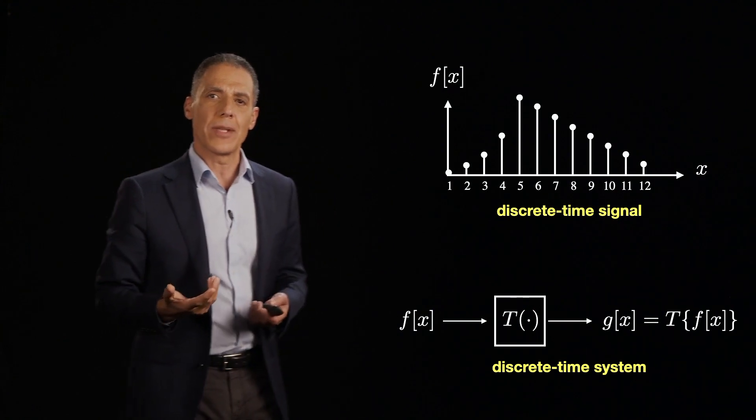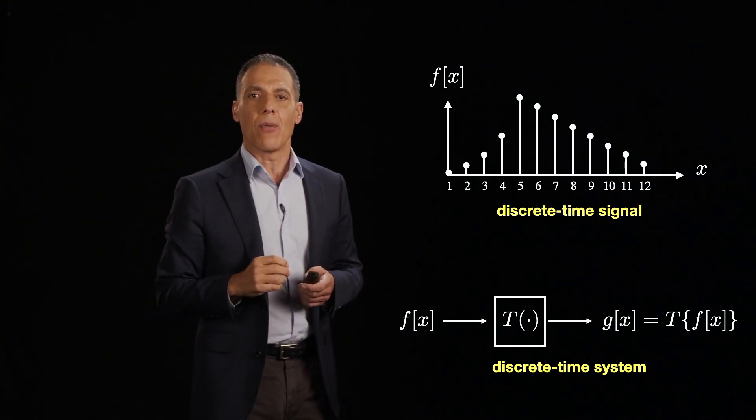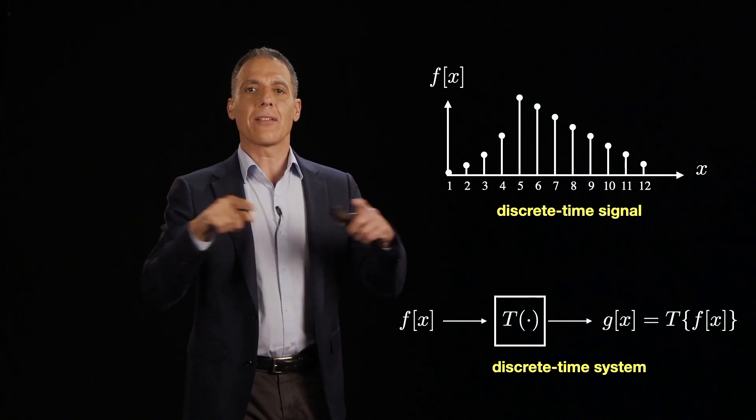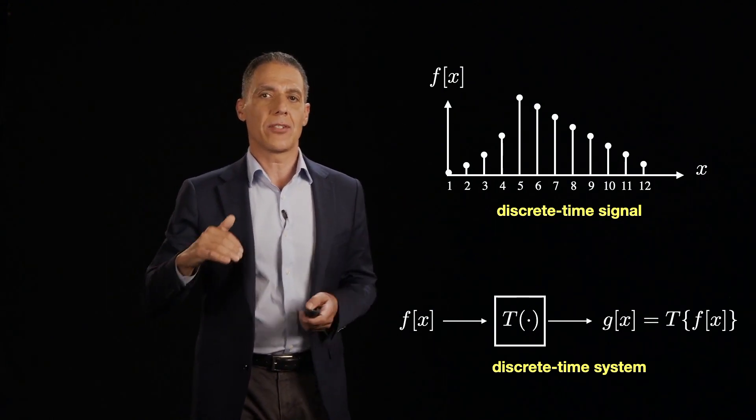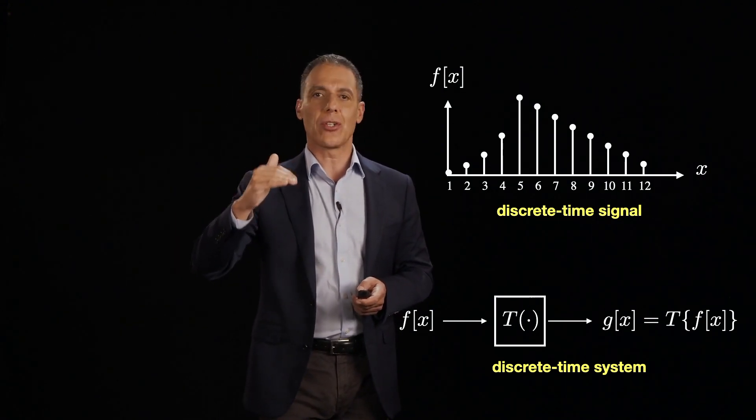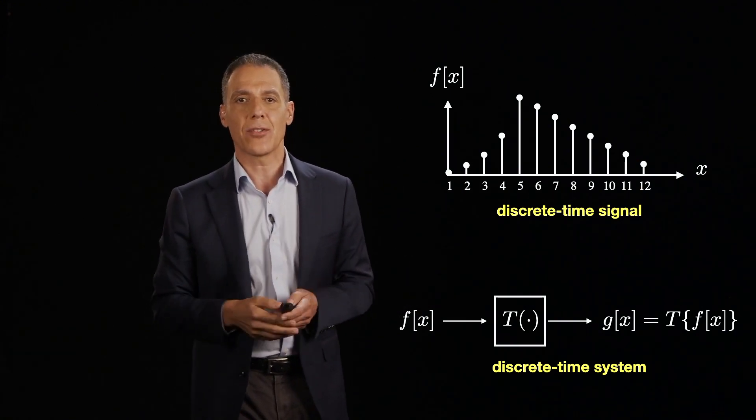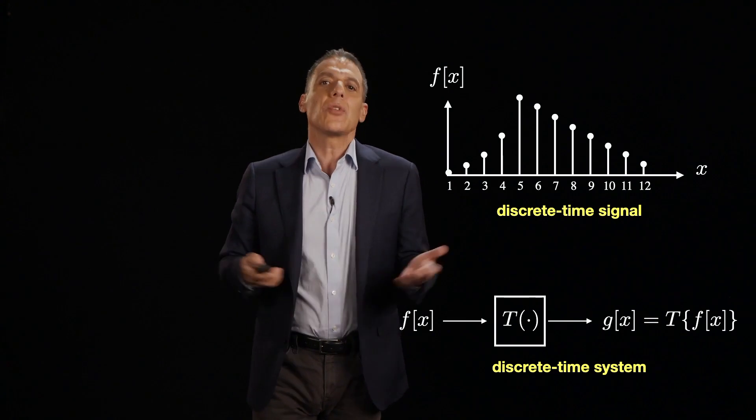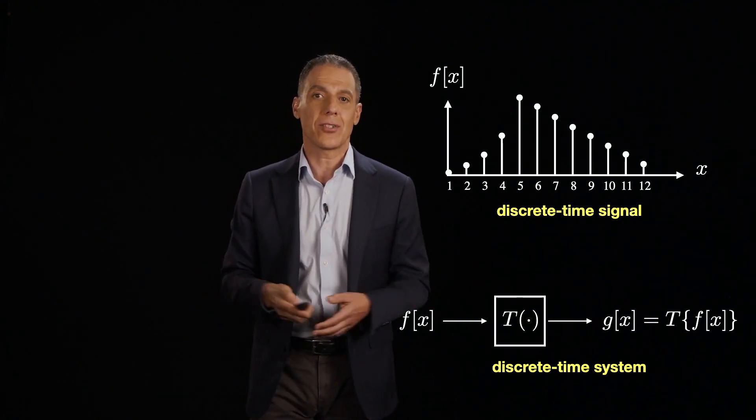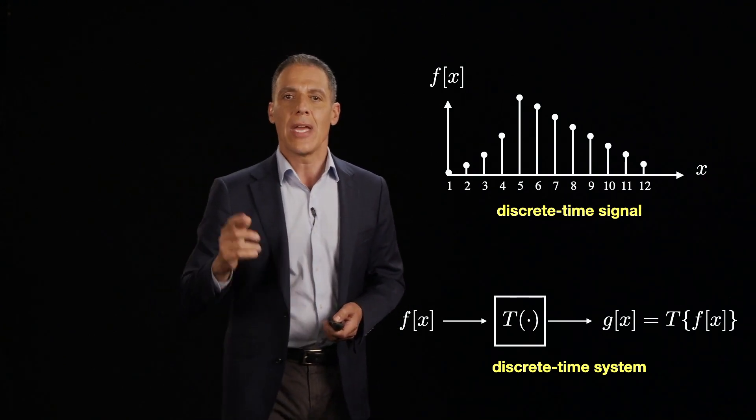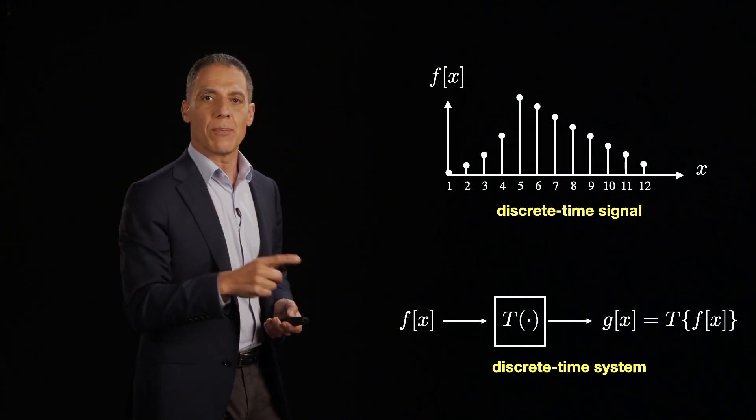OK, so why am I doing that? Here we go. Now, we have discrete time signals. That's a scan line of an image. It's the temperature at each moment in time we are sampling. It is a sound wave, whatever it is. And often we want to do something to that signal or that image. We want to process it. We want to analyze it.